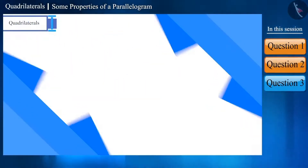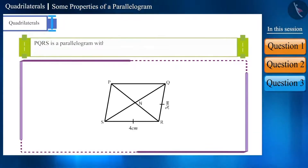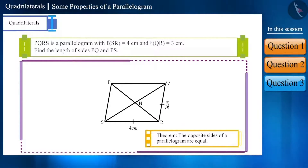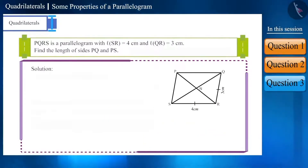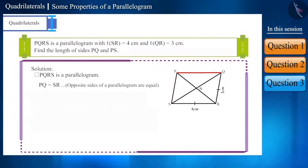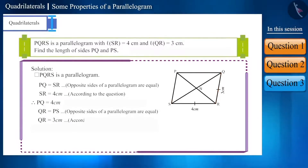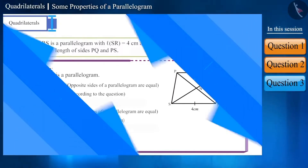Let's move to our next question. PQRS is a parallelogram with side SR of length 4 cm and side QR of length 3 cm. Find the lengths of sides PQ and PS. We know opposite sides of a parallelogram are equal. Since PQRS is a parallelogram, side PQ equals side SR which is 4 cm, so the length of side PQ is 4 cm. Similarly sides QR and PS are also equal, so PS equals 3 cm.